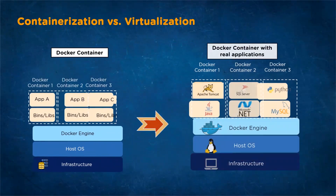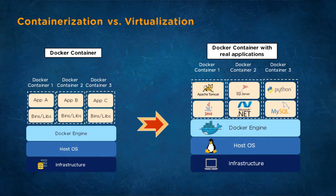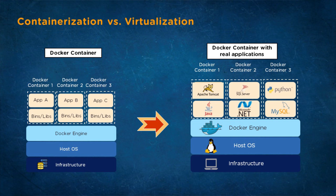A container can package Apache Tomcat and its dependency — the Java programming language — in a single file. A user can then ship the container to another computer environment and run the code without any issue. To understand the differences between containers and VMs in layman terms, the virtual machine is compared to a bungalow and the container is considered as an apartment.